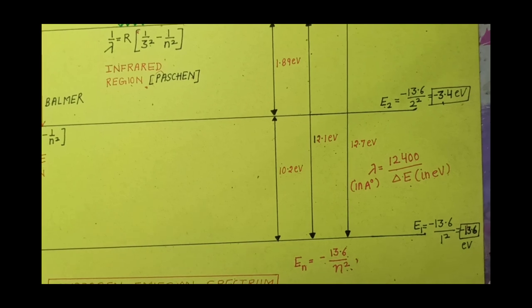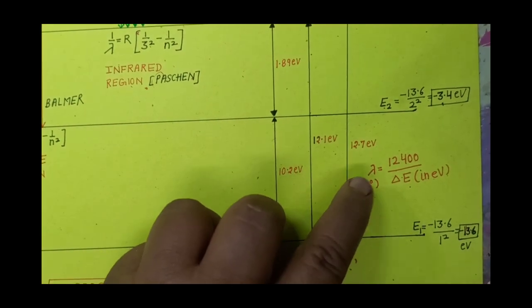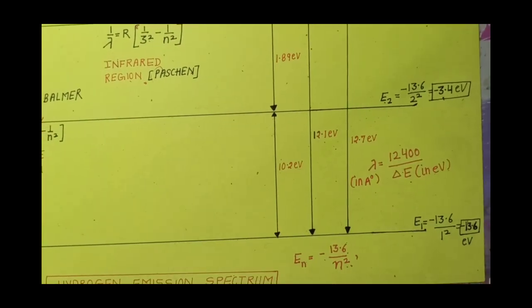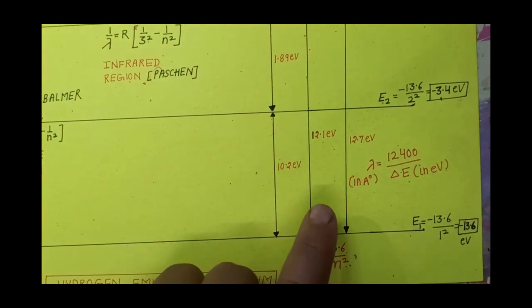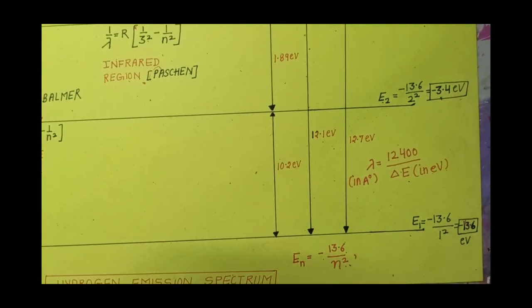Leave your answer in nanometers. You will get the result in Angstroms first, then convert it to nanometers by dividing that value by 10, because in board exams your answer must be in nanometers.